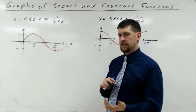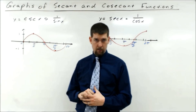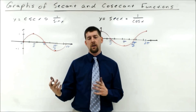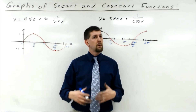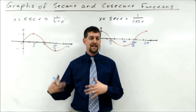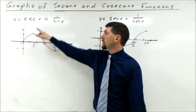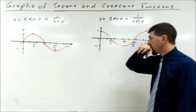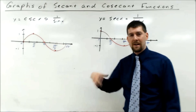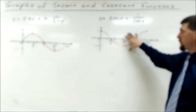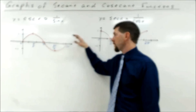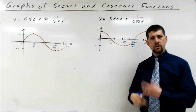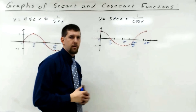Good morning! Today we're going to look at the secant and cosecant graphs. They're really just an extension of sine and cosine, the way cotangent was an extension of tangent. The relationship between secant and cosecant and sine and cosine is that cosecant is the reciprocal of sine, and secant is the reciprocal of cosine. That allows us to take the same key points from the sine and cosine graphs and just take their reciprocals.